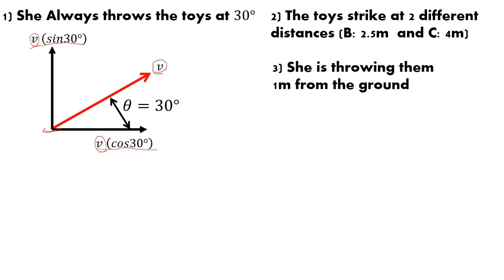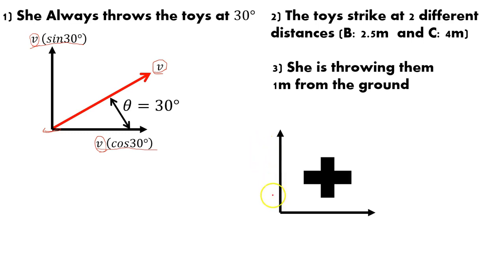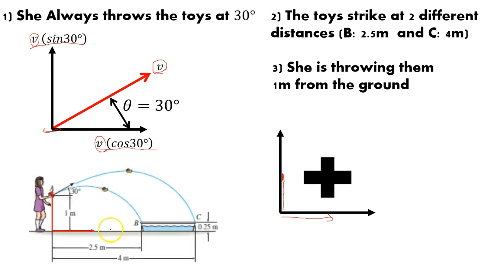Points 2 and 3: the toys strike at two different distances, 2.5 meters and 4 meters for C, and she's throwing them one meter from the ground. We have a coordinate system to work with. We'll establish zero at the ground for both height and horizontal distance. She's releasing them one meter high, and our distances are in the positive x-direction of 2.5 and 4 meters. Anything going downward, such as acceleration, will be considered negative.